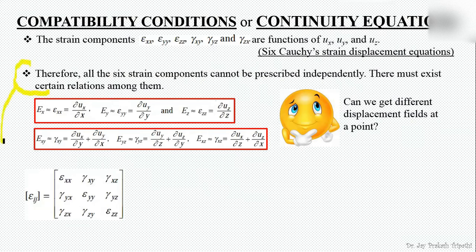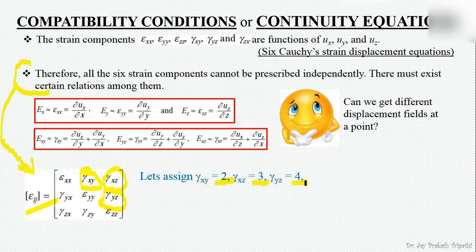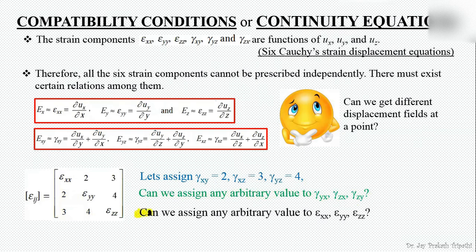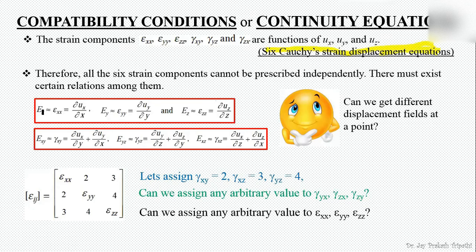This concept can also be explained with an example. Suppose we have a strain matrix and we assign values to gamma_xy, gamma_xz, and gamma_yz. Can we assign any arbitrary value to these shear strain components? Obviously not. And similarly, can we assign any arbitrary value to epsilon_x, epsilon_y, and gamma_xy? The answer is again no. To derive the compatibility condition, we will group the 6 strain-displacement equations into 2 groups.